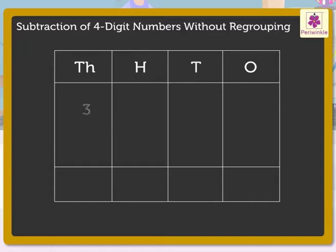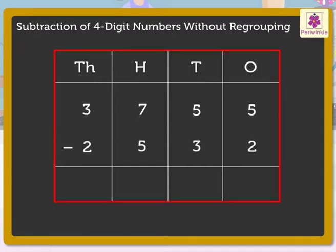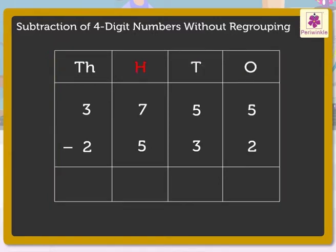Write the numbers 3,755 and 2,532 in the place value chart — that is, in the ones, tens, hundreds, and thousands column. First, we subtract the numbers in the ones column. That is, 2 from 5. We get the number 3. Write it also in the ones column.